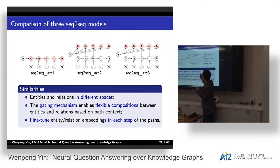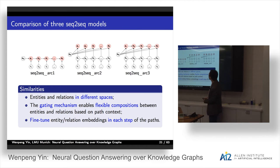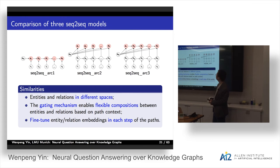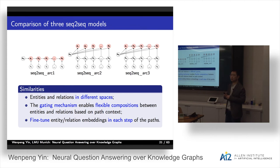There was discussion about whether having a strong direct connection from EH to ET in architecture two is always beneficial, particularly for long chains where the head entity and tail entity may be quite far removed semantically. The question was whether the network actually sees a lot of signal going from EH to ET, and whether that strong influence is desirable. The speaker clarified that this was the motivation for changing from architecture one to architecture two.